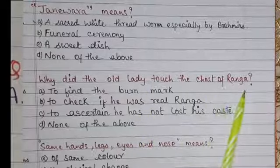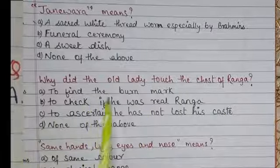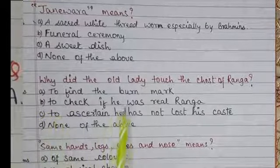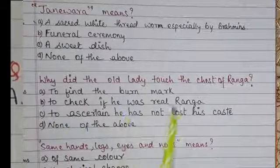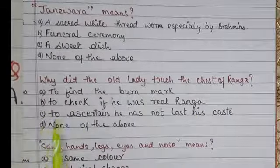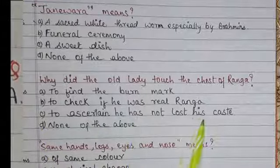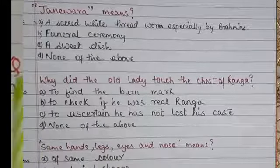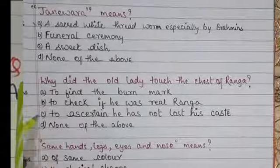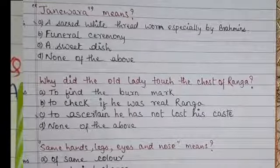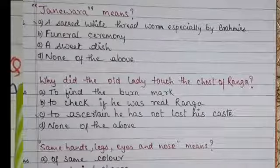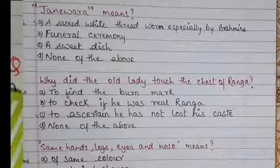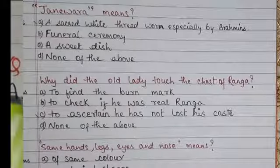Why did the old lady touch the chest of Ranga? Option A: To find a burn mark, Option B: To check if he was really Ranga, Option C: To ascertain he had not lost his caste, Option D: None of the above. Option C is correct — she wanted to ascertain that he had not lost his caste even after being in Bangalore for so many months.